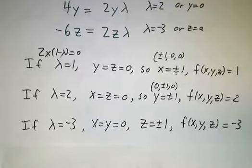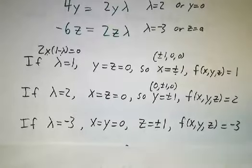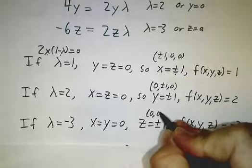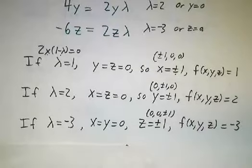If lambda equals negative 3, then we get the points 0, 0, plus or minus 1. And f is negative 3.